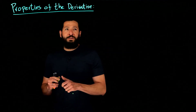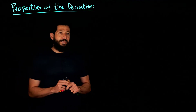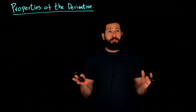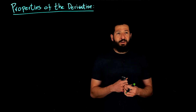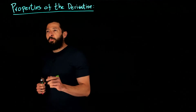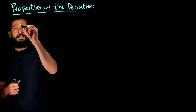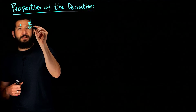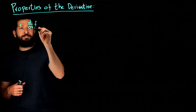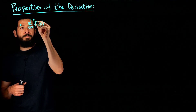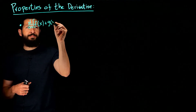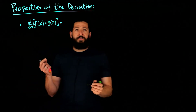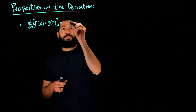Today we're going to talk about the properties of the derivative, which will allow us to take derivatives without having to do the limit process. We'll start with the first property called linearity: when you take the derivative of a sum of two functions, you can take the derivative of each one individually and add them together.